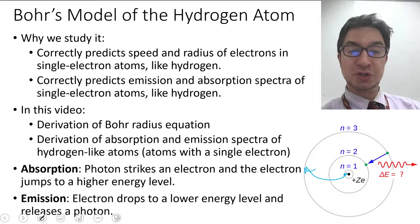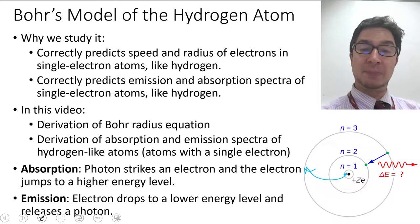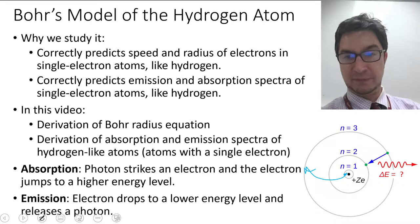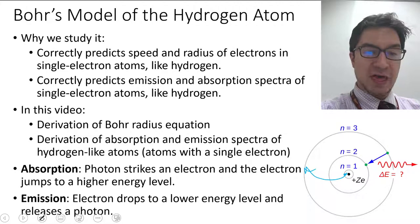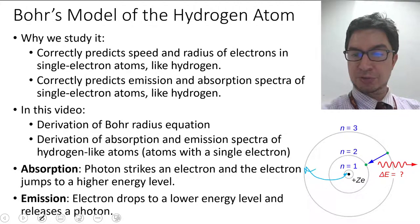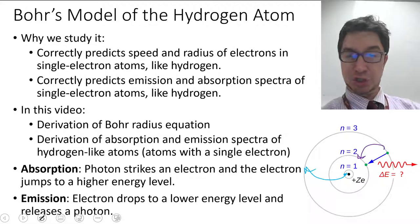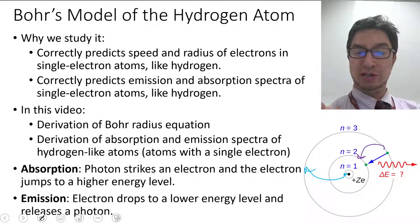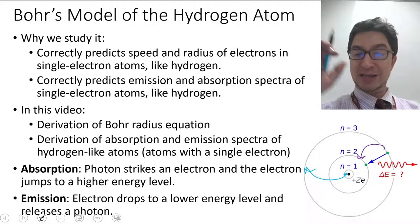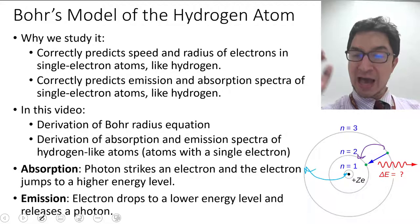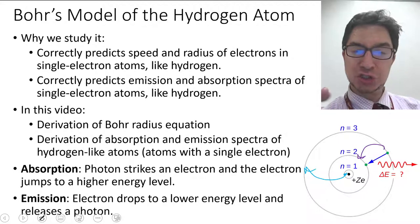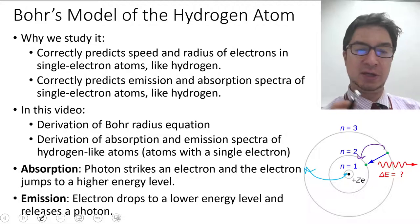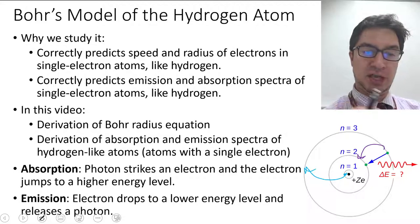Whereas if an electron drops down to a lower energy level — for example, in this picture, you can see an electron that jumps down from n equals 3 to the n equals 2 level — that would be an emission, because the electron drops to a lower energy level and the energy it lost is given out as a photon that is emitted from the atom. That's what we mean by the difference between electron absorption and emission.